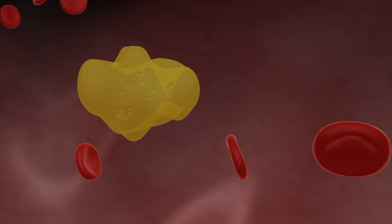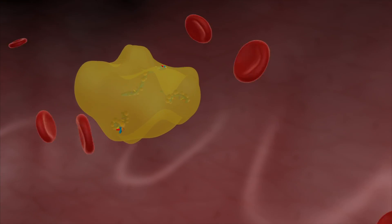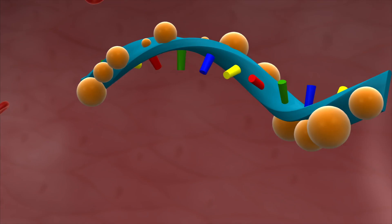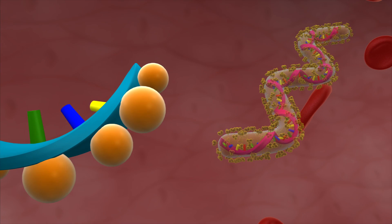They then wrapped a synthetic siRNA combined with a protein called argonaut in fat molecules and injected the drug into the macaques to target three Ebola genes responsible for virus replication.